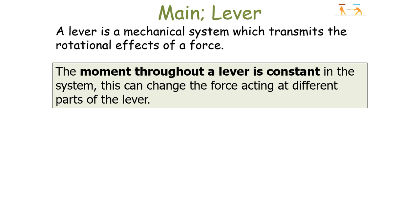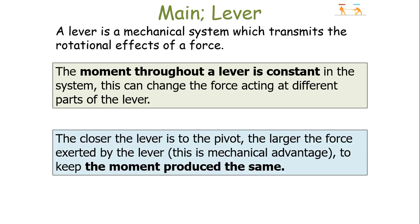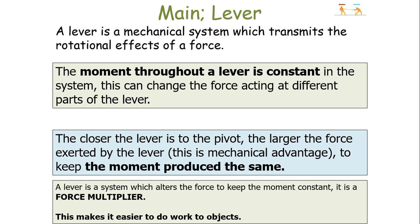A lever is a mechanical system which transmits the rotational effects of a force — a moment. The moment throughout a lever is constant in the system, so we can change the force acting on different parts of the lever. The closer the lever is to the pivot, the larger the force exerted, which is a mechanical advantage, keeping the moment produced the same. A lever alters the force to keep the moment constant, acting as a force multiplier to make it easier to do work on objects.